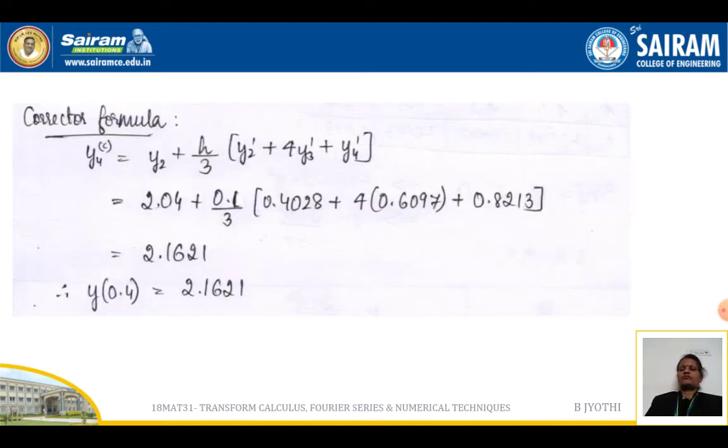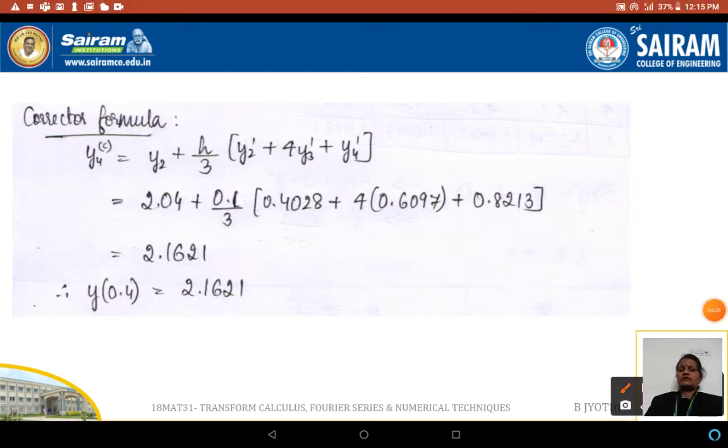So x₄ is 0.4 and y₄ is 2.1623. This on simplification gets 0.8213. Now let us take the corrector formula. The corrector formula is given by y₄(c) = y₂ + h/3[y₂' + 4y₃' + y₄'].